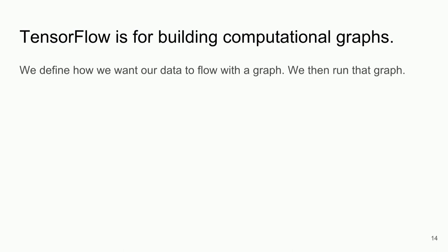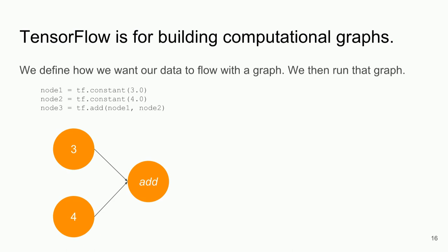For example, the hello world: we define three nodes. Node one is a constant 3.0, node two is a constant 4.0, and node three is an operation to add those two nodes together. If we visualize this computational graph, three and four go into an add operation — and that's roughly what TensorBoard does for you, helping your understanding of the graph.